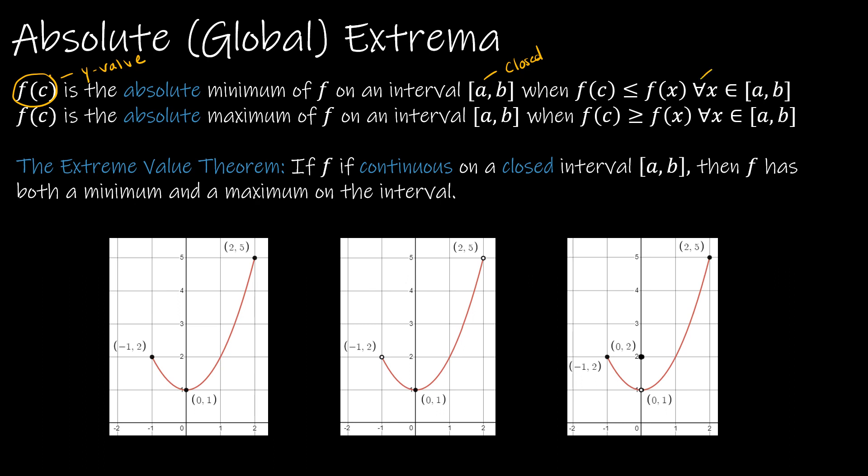And this, in case you haven't seen that before, means for all. So essentially, we're just saying if the y value is less than the y value of any other point on our function, it's our absolute minimum. Same thing for absolute max. If the y value is greater than the y value for every other value on our function, then it is the absolute maximum.